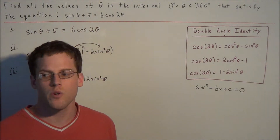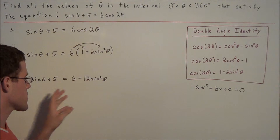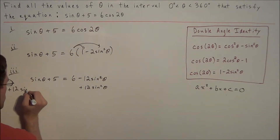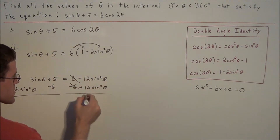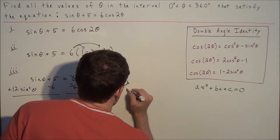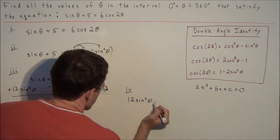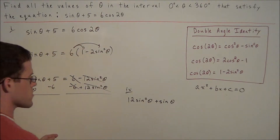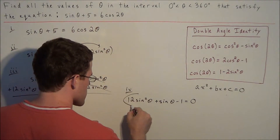Similar to solving quadratic equations, we need to get everything on one side of the equal sign. We add 12 sine squared theta to both sides and subtract 6 from both sides. On the right-hand side, 6 minus 6 cancels and negative 12 sine squared theta plus 12 sine squared theta cancels. This gives us 12 sine squared theta plus sine theta minus 1 equals 0, concluding the first stage of the problem.